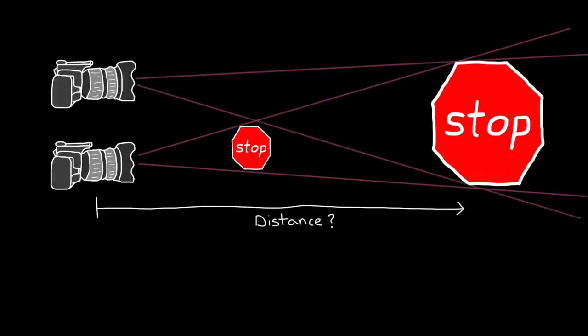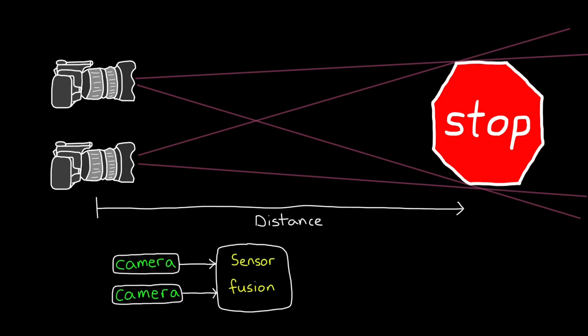However, we can add a second optical sensor, and through sensor fusion, extract three-dimensional information. The fusion algorithm would compare the scene from the two different angles and measure the relative distances between the objects in the two images. So in this way, these two sensors can't measure distance individually, but they can when combined.